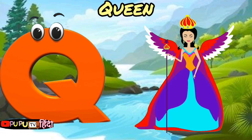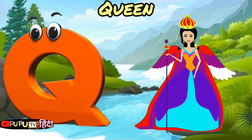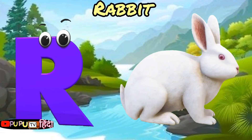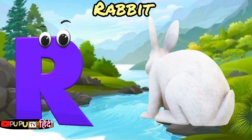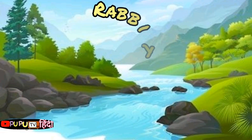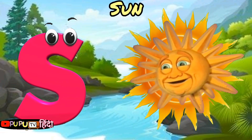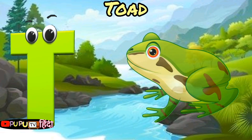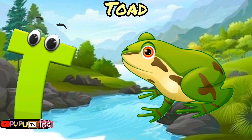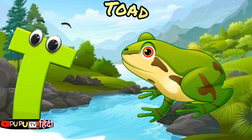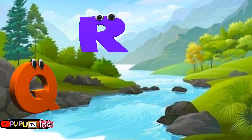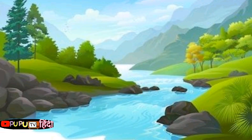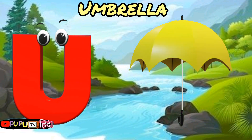Q is for Queen, Q-Q-Queen. R is for Rabbit, R-R-Rabbit. S is for Sun, S-S-Sun. T is for Toad, T-T-Toad.